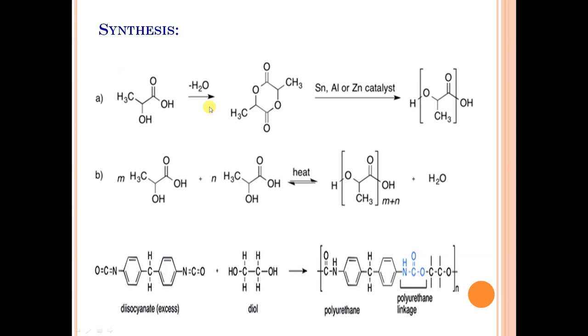Lactic acid on dehydration produces a cyclic compound. This cyclic compound on treatment with metals like aluminium, zinc, etc. forms a polymer which is a polylactic acid. Look at this here. H combines with OH with the elimination of water. Then the remaining is CH3CO. So CH3CO, then C double bond O, C double bond O. So this is from one molecule.